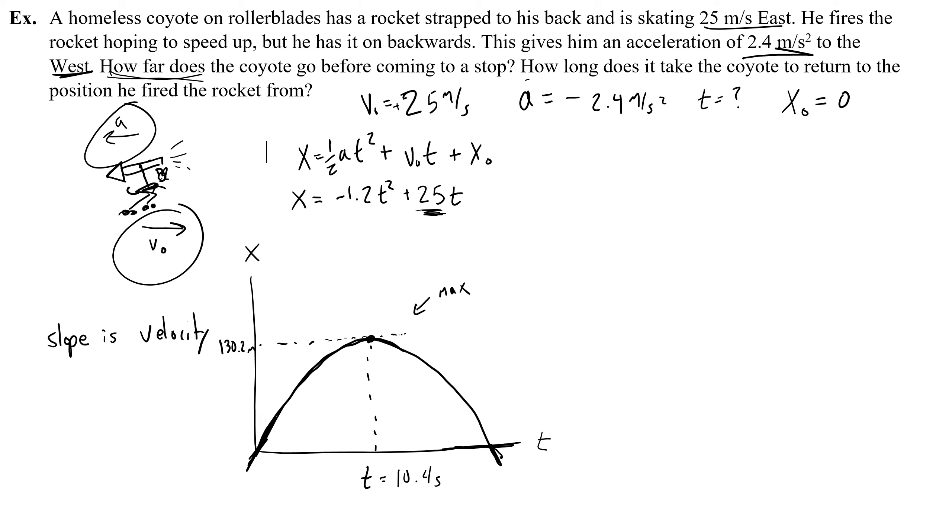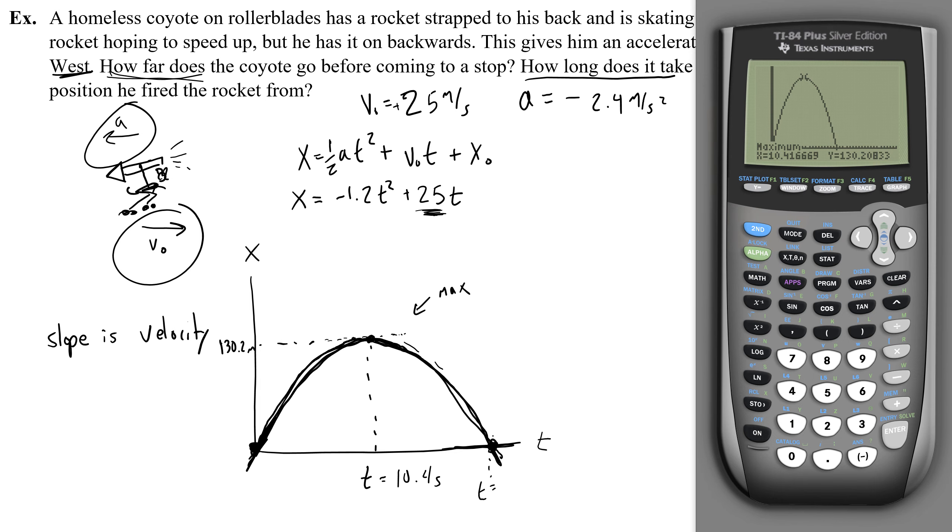Now let's ask this question, how long does it take the coyote to return to the position he fired the rocket from? So the coyote started here at zero, what this is asking us to do is find when does the coyote come back to zero? So basically on the way up, the coyote is slowing down to a stop, which is 130.2 meters, then the rocket is going to continue to accelerate him, but now in the opposite direction. Now he has negative slopes, so negative velocities, he's moving backwards until eventually he reaches that point that he fired the rocket from. Well it might be obvious what you're supposed to do here. You can use the zero function to figure out what value that occurs at. So I can go to my graphing calculator, and now I can use that zero function, second, trace, zero, to figure out where does this graph cross the x-axis.